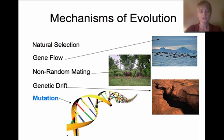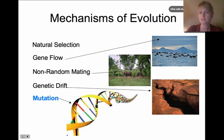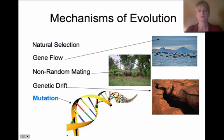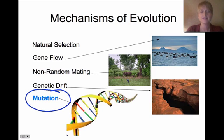Genetic drift is another mechanism of evolution. Imagine a population living on a cliff top, and then an earthquake creates a chasm, splitting the population into two groups. Over long periods of time, one part of the population is going to change differently than the other — that's genetic drift.